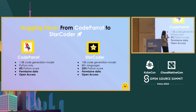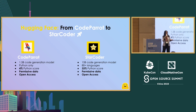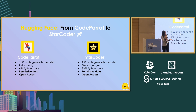A year ago, we released CodeParrot, which was more of an educational tool to just have the pipeline to train a code model — it didn't focus a lot on performance. A few months ago, we released StarCoder, a very strong 15 billion parameter code generation model trained on more than 80 programming languages. It outperforms the original Codex model released by OpenAI on Python and also other languages, and it only used permissive data for the training.